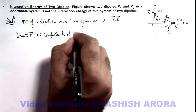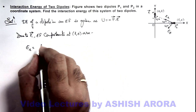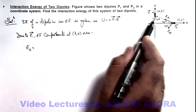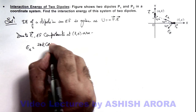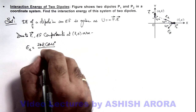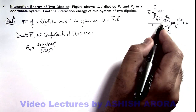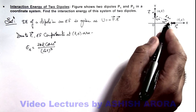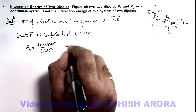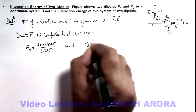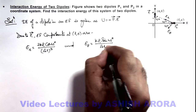Due to dipole moment p1, the electric field components at location (l, 0) — the radial electric field in magnitude is given by 2kp·cosθ / r³, so I can write it as 2kp1·cos45° divided by (√2·l)³, because the separation is √2·l. The value of transverse electric field will be kp1·sin45° divided by (√2·l)³.